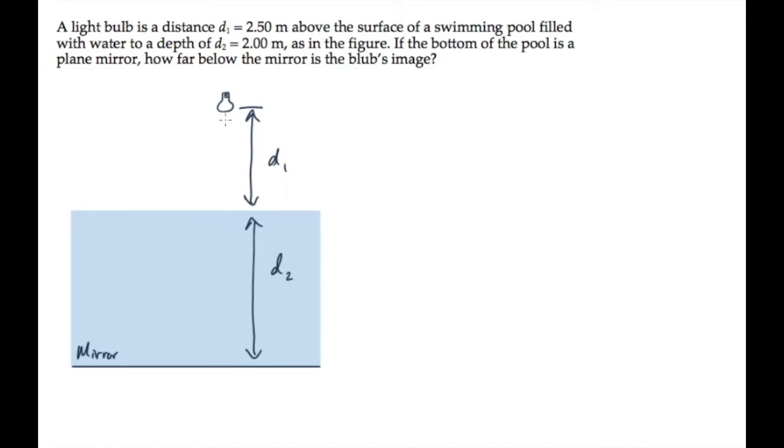This problem gives us a mirror on the bottom of a swimming pool of depth d2 and a light bulb a distance d1 above the water. We're asked to find how far below the mirror the bulb's image forms.